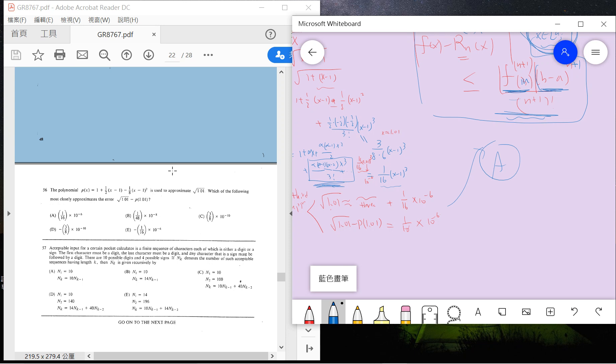So if you use the second term, the second order, then you minus a lot and you plus something, so the error must be positive. So this is somehow a tricky part. So the answer is A.